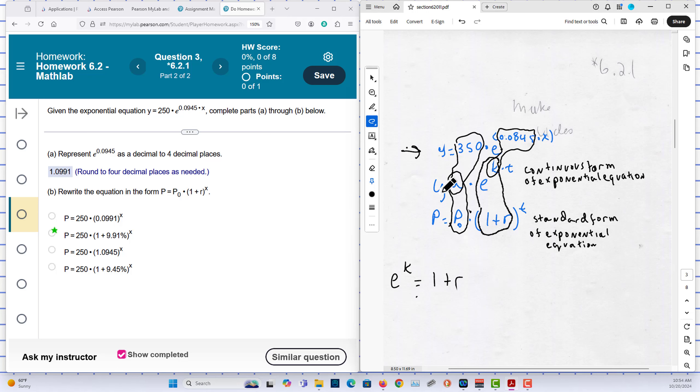Underneath that, I have the continuous form, which is y equals A times e to the kt. That is the continuous form of an exponential equation. Underneath that, I have the standard form of an exponential equation you might see when dealing with compound interest or something like that.